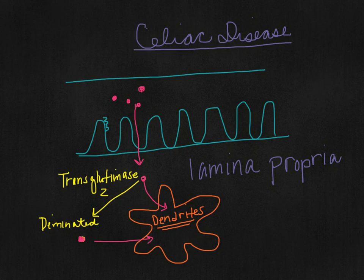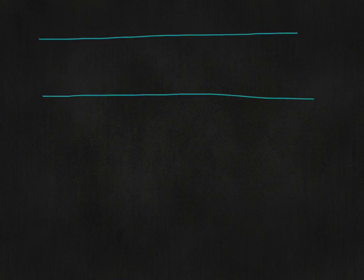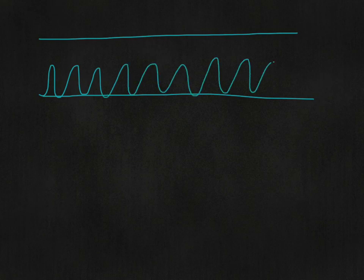These deaminated gluten peptides will also be consumed by dendrites, and the story ends. Now with people with celiac disease, we're going to draw our intestines again and show what happens with the gluten.